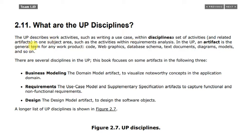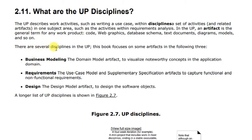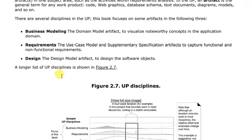In UP, an artifact is a general term used for any work product. Code is an artifact, web graphics are artifacts, a database schema is an artifact, and diagrams and models are also referred to as artifacts. The main disciplines we will discuss are Business Modeling, Requirements, and Design. Business Modeling uses the domain model artifact to visualize noteworthy concepts in the application domain.